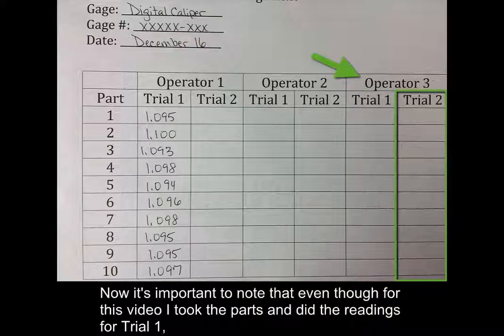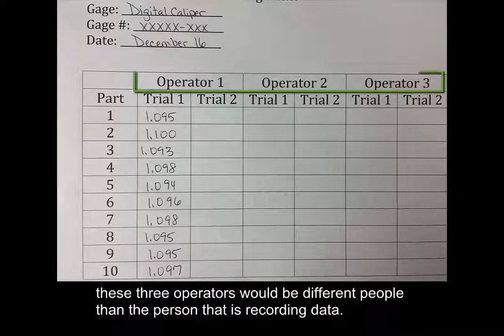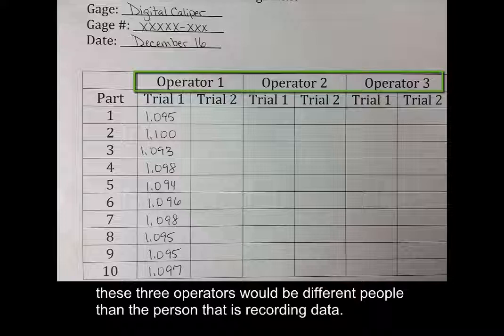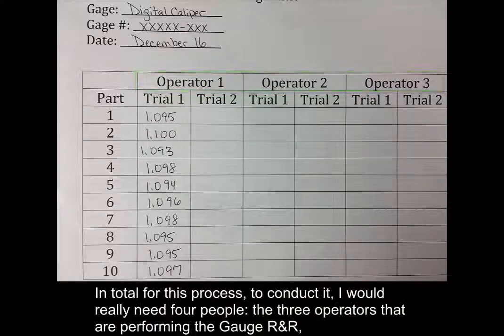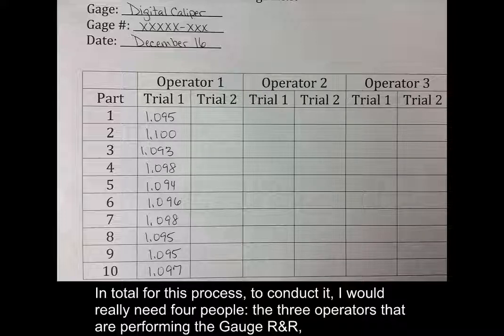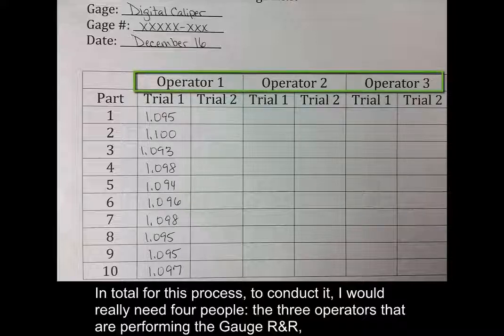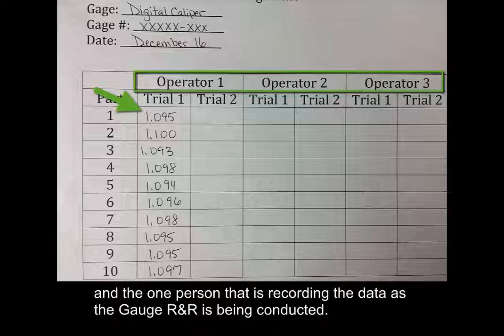Now, it's important to note that even though for this video I took the parts and did the readings for trial 1, these three operators would be different people than the person that's recording the data. So in total for this process, to conduct it, I would really need four people. The three operators that are performing the gauge R&R, and the one person that's recording the data as the gauge R&R is being conducted.